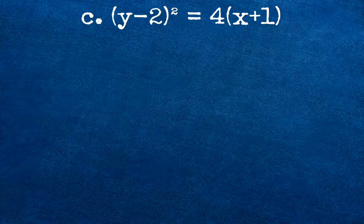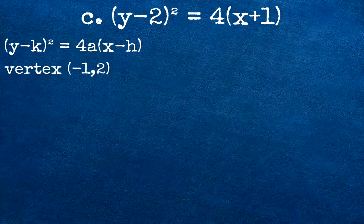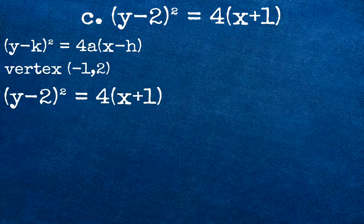For our third example, quantity y minus 2 squared equals 4 times quantity x plus 1. The equation is written as quantity y minus k squared equals 4a times quantity x minus h. Our vertex is negative 1 and 2. To get the general form, we are going to multiply y by itself.